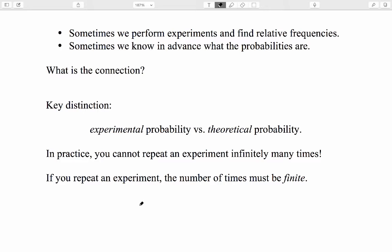Now, wait a minute. Thus far we've talked about performing experiments and finding relative frequencies. So that's one thing that we do sometimes, as with that coin-flipping experiment at the beginning. But we've also had examples where we declared in advance what the probabilities are. For example, when we declared in advance that all the different birth orders in a family of three are equally likely. So these seem to be two different approaches. So what's the connection? We have to make a distinction between experimental probability and theoretical probability.